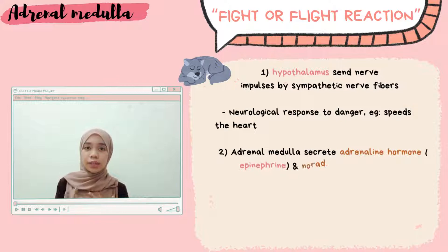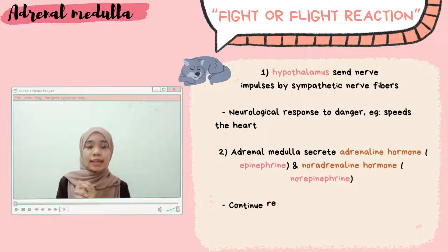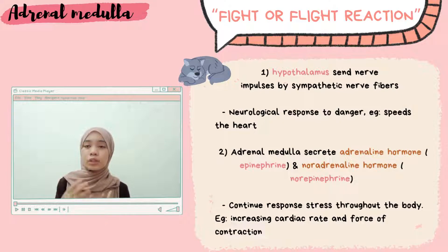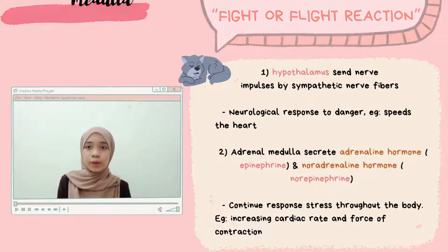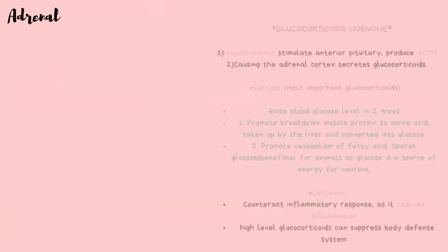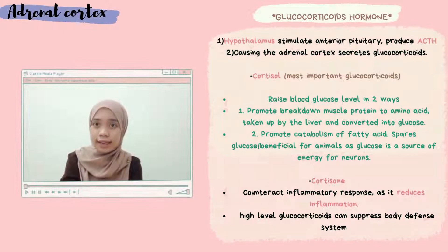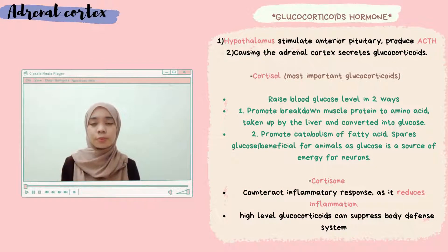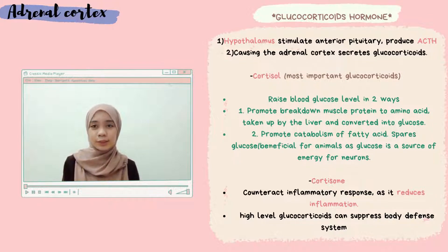For example, heart rate increases as an immediate response. The adrenal medulla secretes adrenaline and noradrenaline, which continue to propagate the stress response throughout the body. On the other hand, the adrenal cortex has a longer-term, slower stress response.